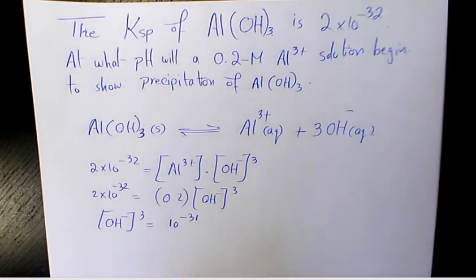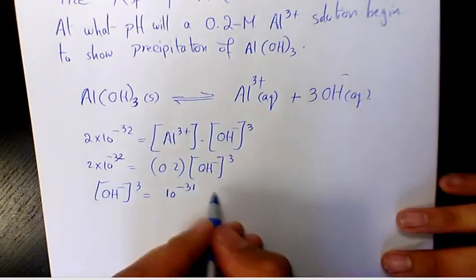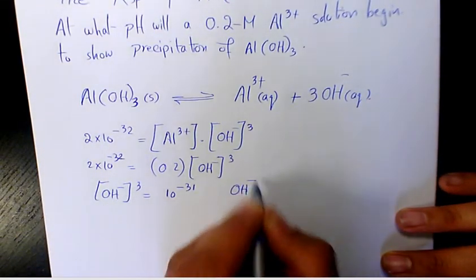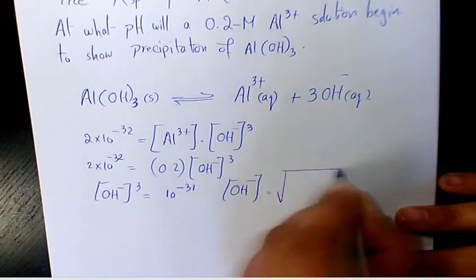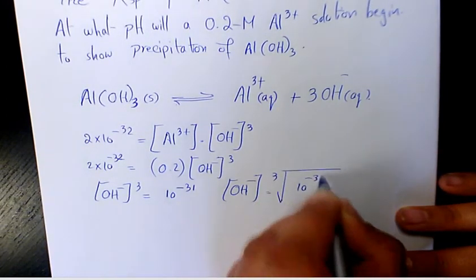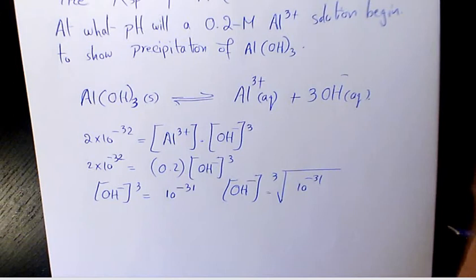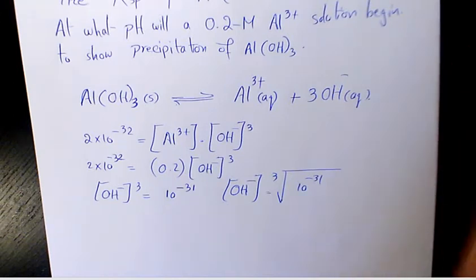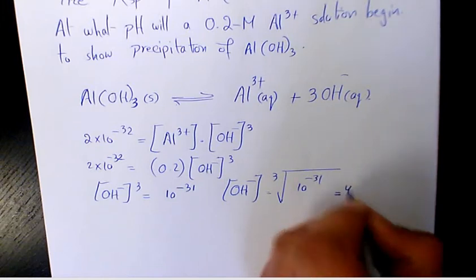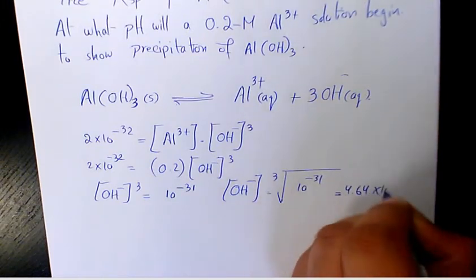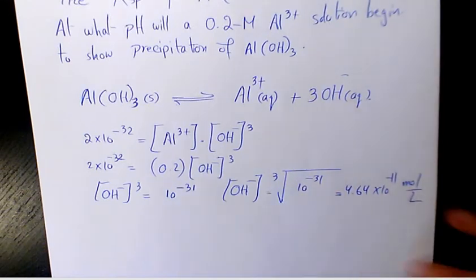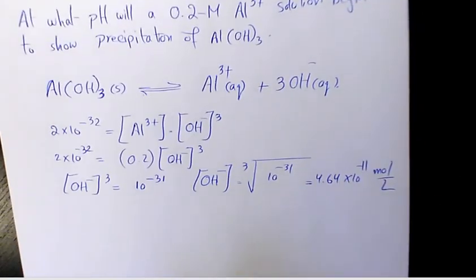That's [OH⁻]³, so [OH⁻] will be the cube root of 10⁻³¹, so that's gonna be 10⁻³¹ to the power of 1/3. That's gonna be 4.64×10⁻¹¹ mol per liter. That's gonna be the concentration